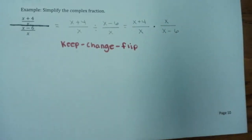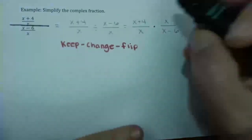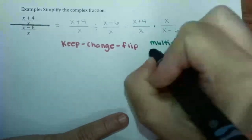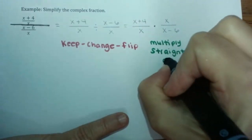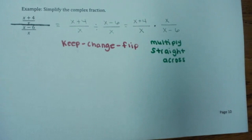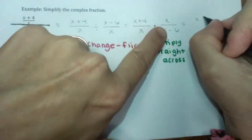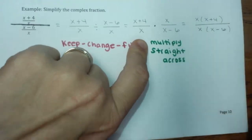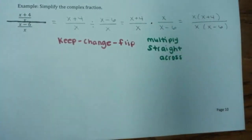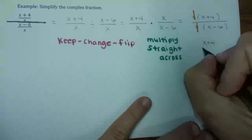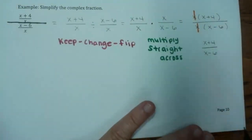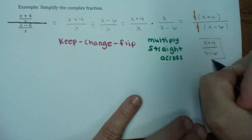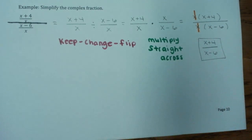Now we're multiplying straight across. I have x plus 4 times x — writing that x out front — all over x times x minus 6. They both have an x in common, so I can divide out that x from top and bottom. We're left with x plus 4 on top and x minus 6 on the bottom. These are not the same factors, so they cannot cancel. Our final answer is x plus 4 over x minus 6.